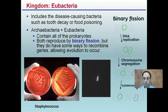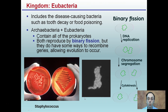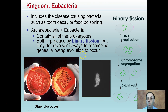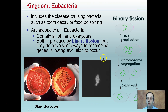Eubacteria reproduce by binary fission, as shown in this image. This includes disease-causing bacteria such as those responsible for tooth decay or food poisoning. Both Archebacteria and Eubacteria contain all of the prokaryotes and both reproduce by binary fission. However, they do have ways to recombine genes allowing for evolution to occur — remember plasmids, those DNA sequences that can be transferred. Staphylococcus on Petri dishes here is an example of Eubacteria.